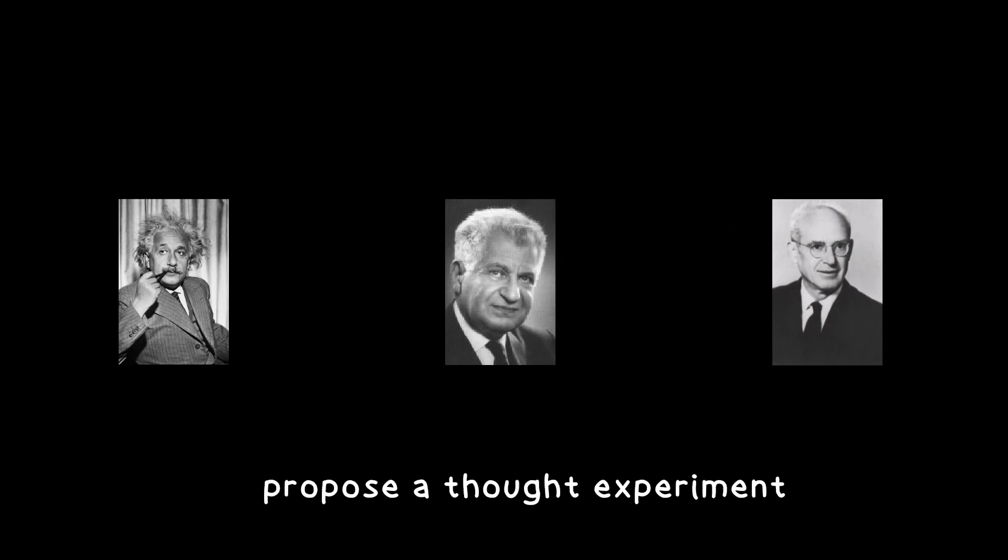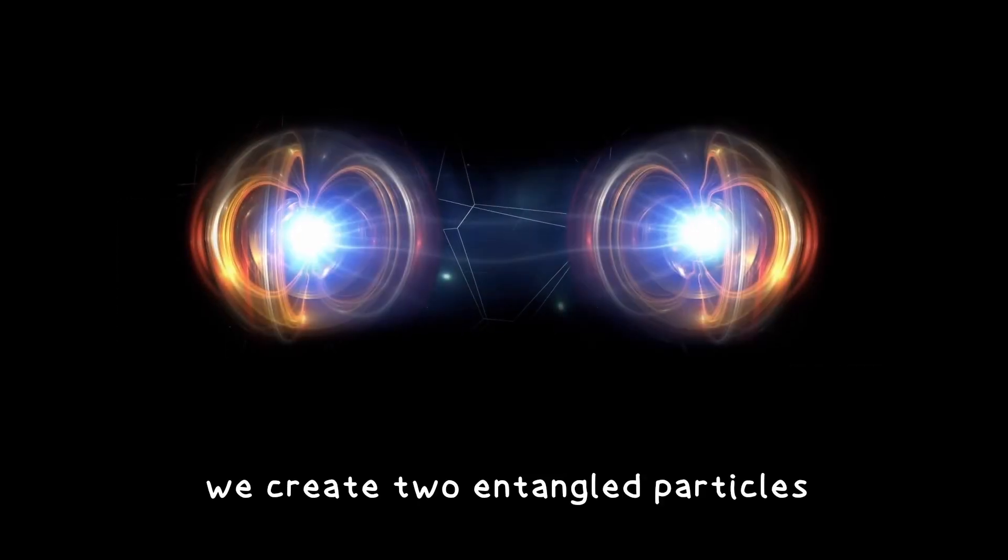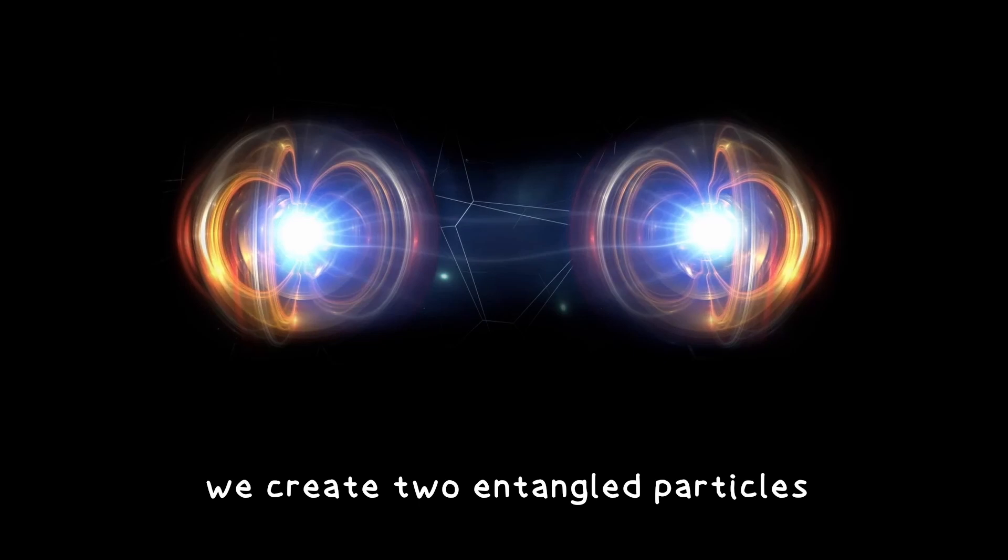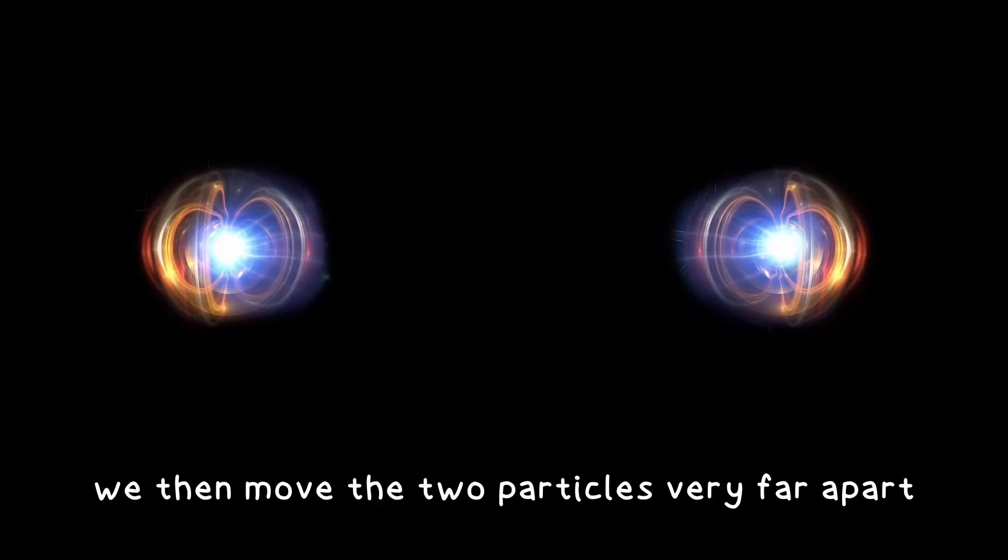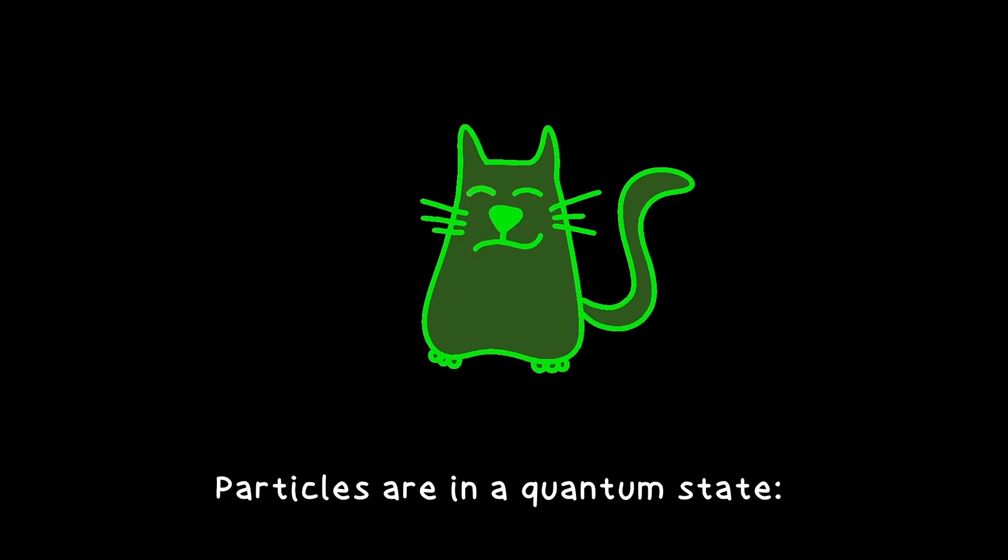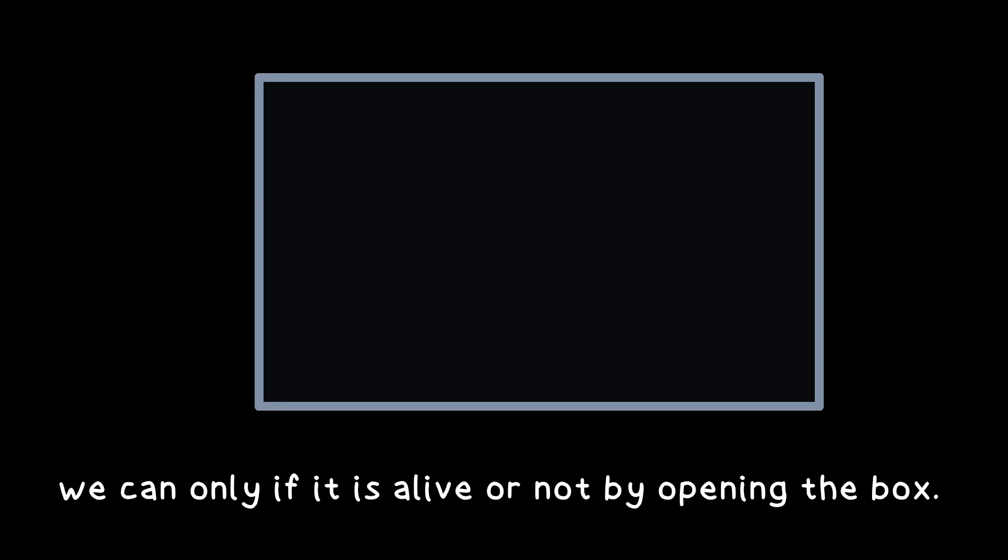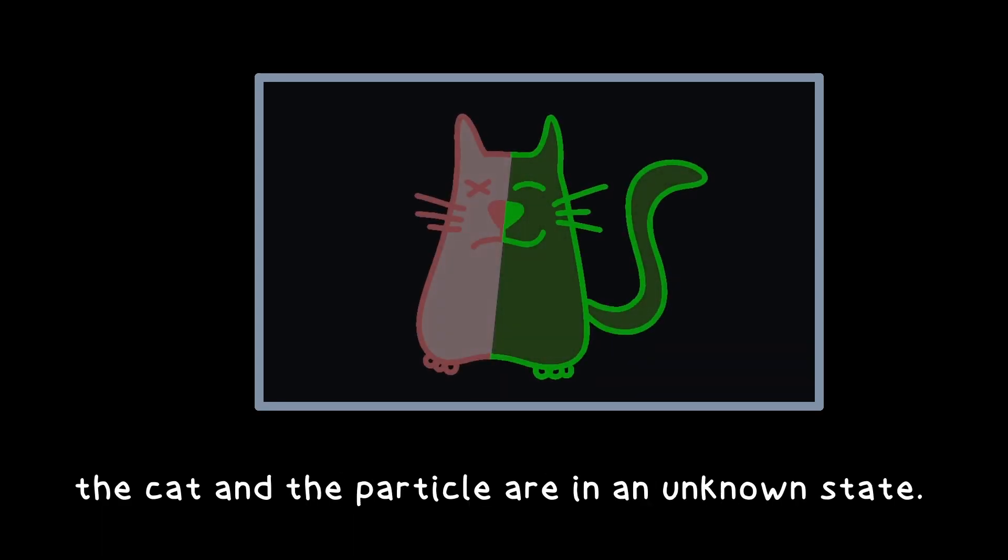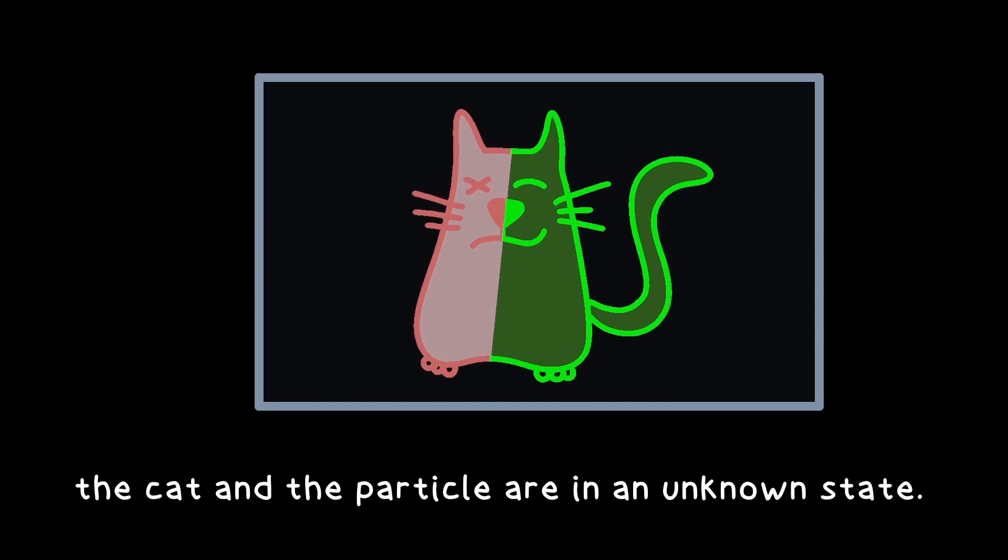Einstein, Podolsky and Rosen propose a thought experiment where we create two entangled particles, for example with the system above. We then move the two particles very far apart and we observe something fascinating. Particles are in a quantum state. Like with Schrödinger's cat, we can only know if it is alive or not by opening the box. As long as we don't look, the cat and the particle are in an unknown state.